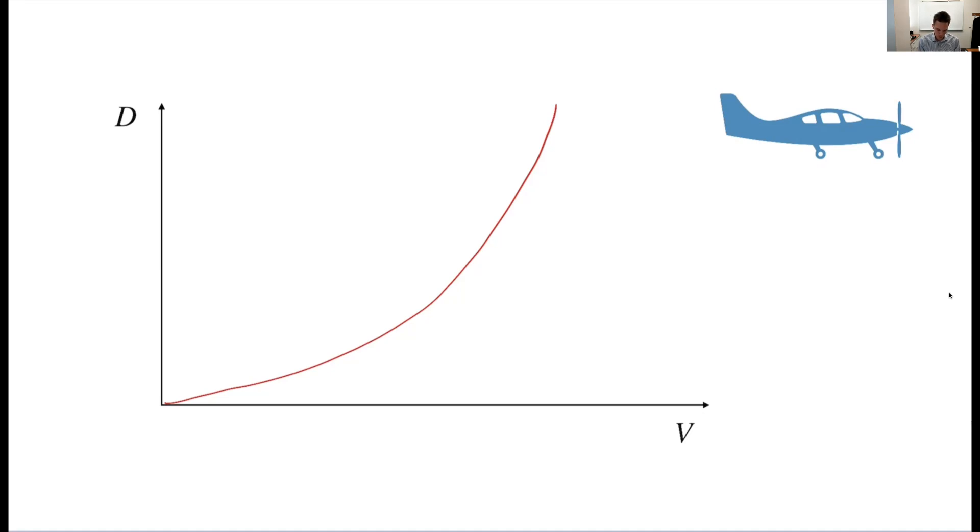Actually, for an airplane, it looks something more like this. And I drew that really bad, but I'll try it again. It's hard to draw this, but let's say something like this. I made them kind of asymptote to the same, but that's just coincidental. The point is that, yes, indeed, at the higher speeds as the velocity increases, the drag increases quadratically. But we also get really high drag at low speed. So what is different about an airplane as compared to a car?